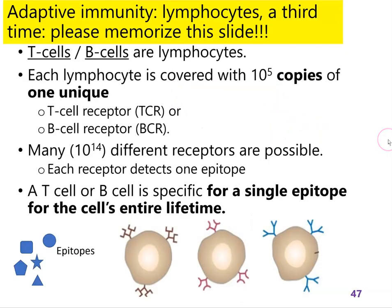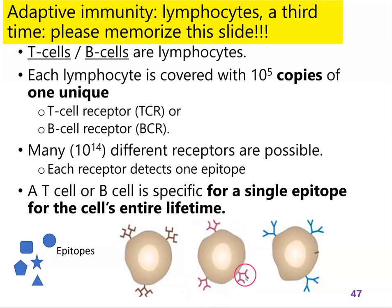It's the slide about lymphocytes again — it's very important. When you sit down to think about the adaptive immune system, draw this first. Remind yourself that we have a huge pool of these lymphocytes. Each of them can only see one thing — they can only detect one epitope. And our immune system has to find the right one and activate it so that it can protect us.